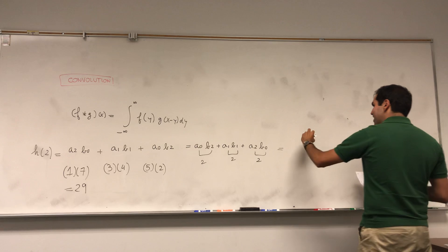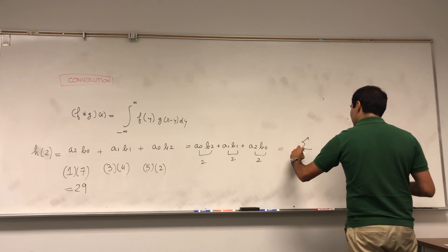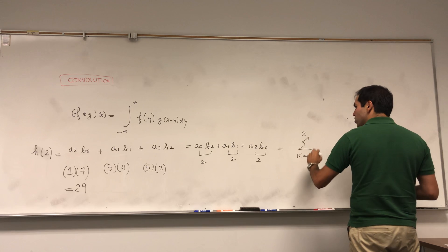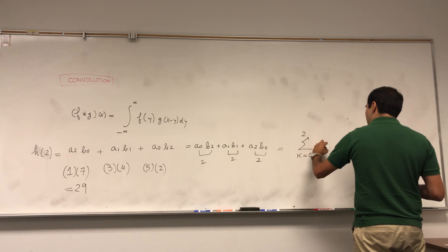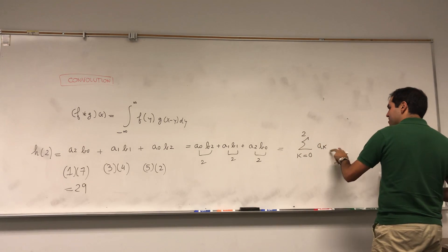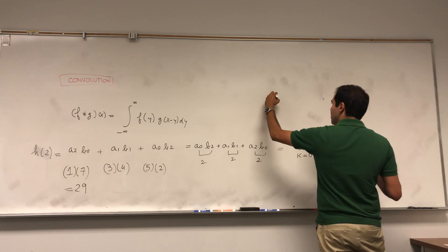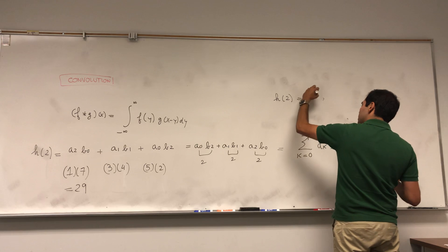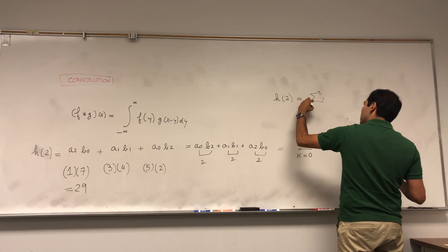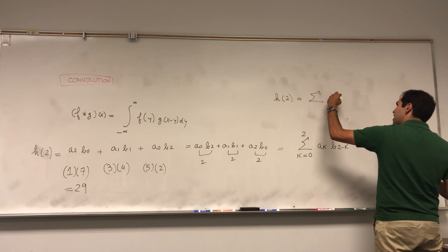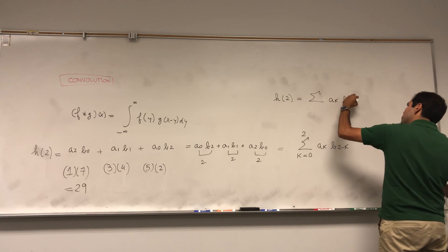Which you can just write in terms of summation notation: sum from k equals 0 to 2 of aₖ, and again the sum is 2, so b(2 minus k). So in other words, the coefficient h(2) is sum—again, sum, not important where it goes from—but it's aₖ b(2 minus k).